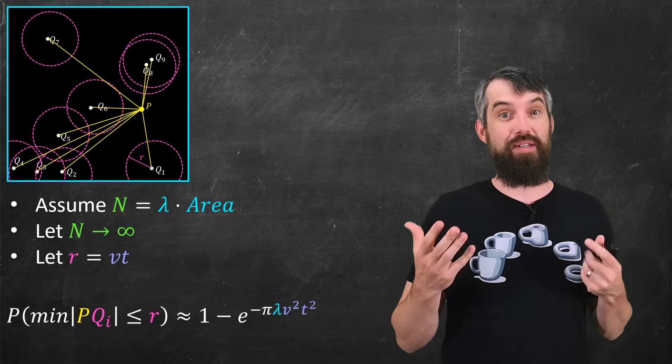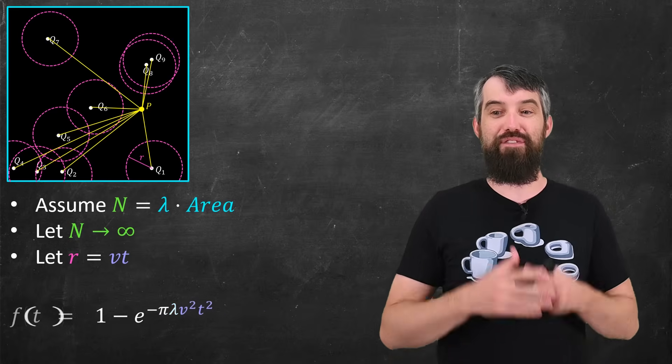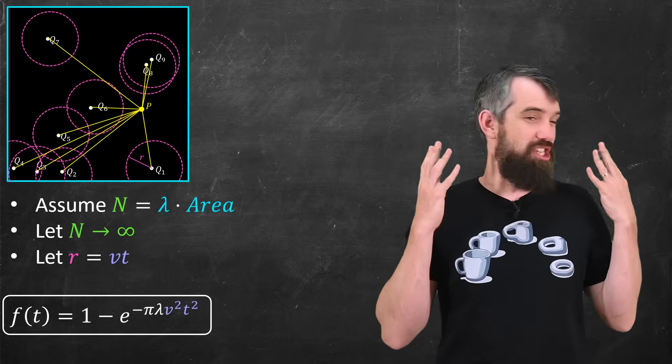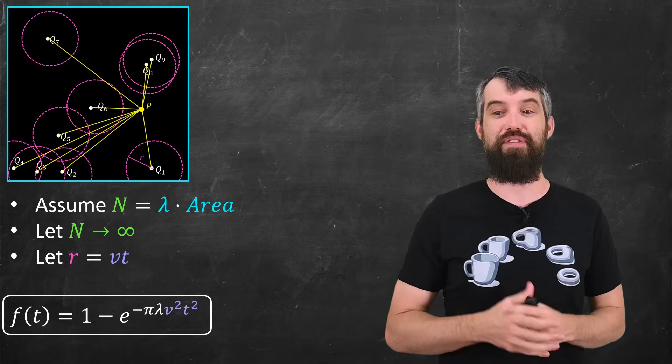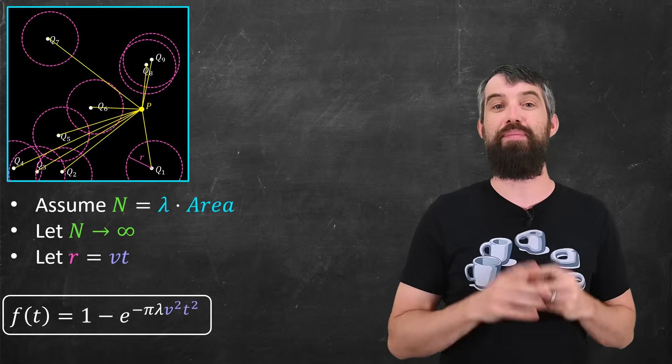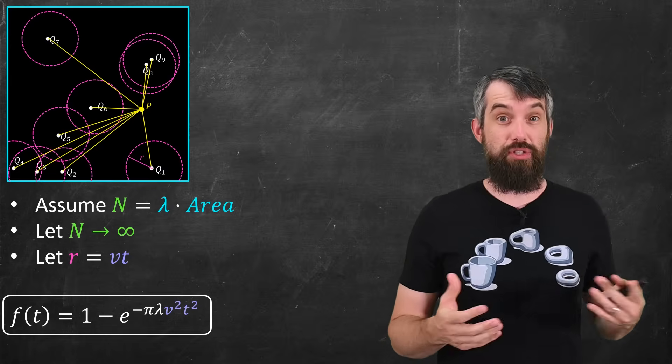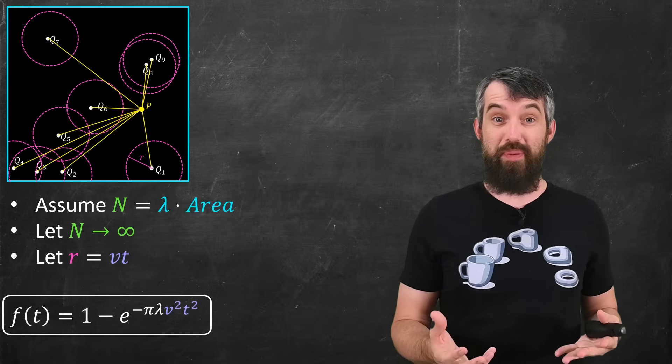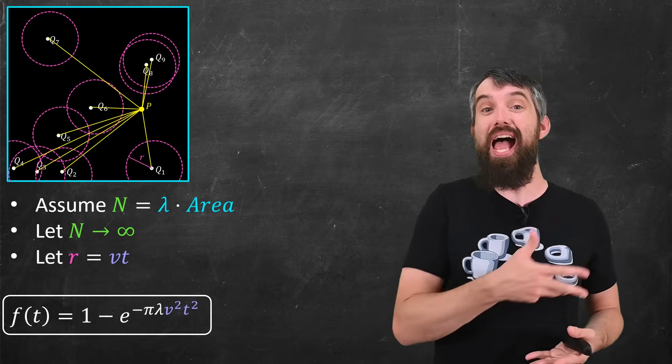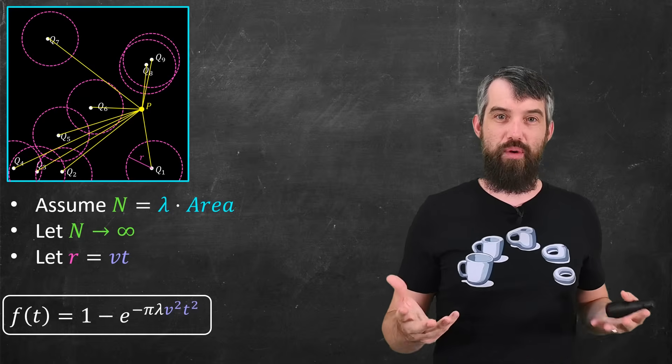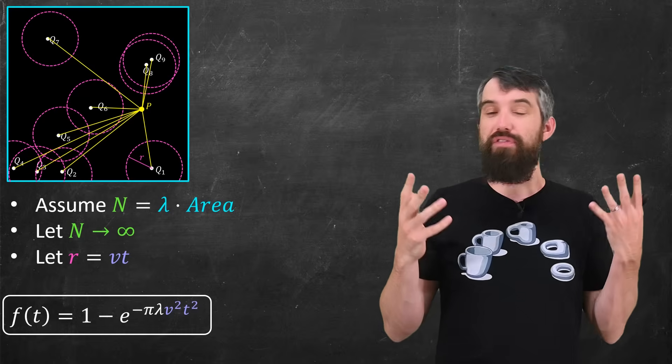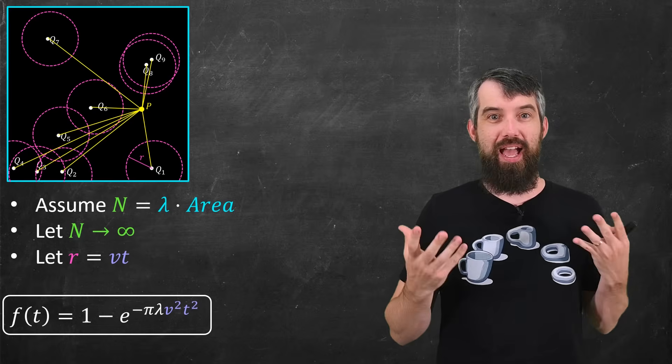This can give me v squared t squared. And so I have the final function, it's just a function of t that's all that's left, 1 minus e to the negative pi lambda v squared t squared. And by our construction, this just represented the probability that the point p was inside one of those crystals, or in other words, the fraction of the total region that is crystallized at any point in time.